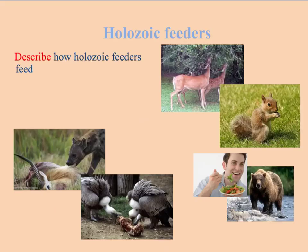Heterotrophs can be divided up according to what they ate and how they ate it. Holozoic feeders take in their food inside their body and they secrete the enzymes in their gut, digest everything internally and then absorb it into their bloodstream or into their tissues. These animals that eat only plant materials are called herbivores, whereas those that eat only meat or other animals are called carnivores.